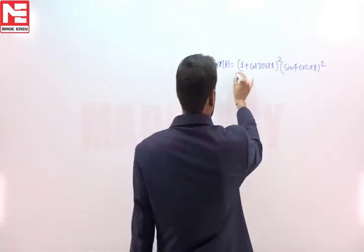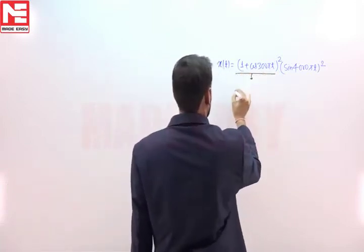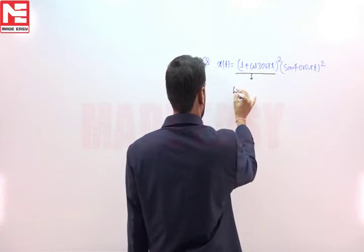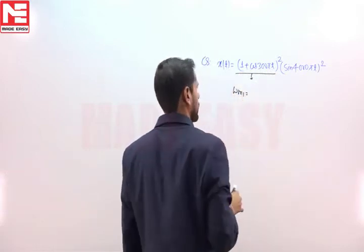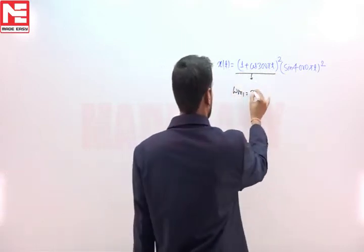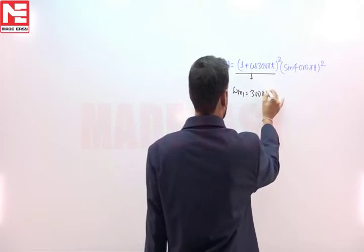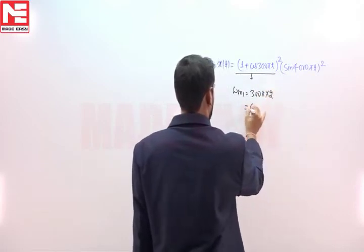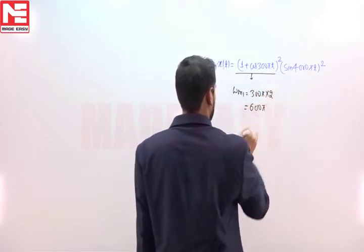Now, in this signal if we calculate the maximum frequency component in radian per second, it will be equal to 300π times 2, or 600π radian per second.